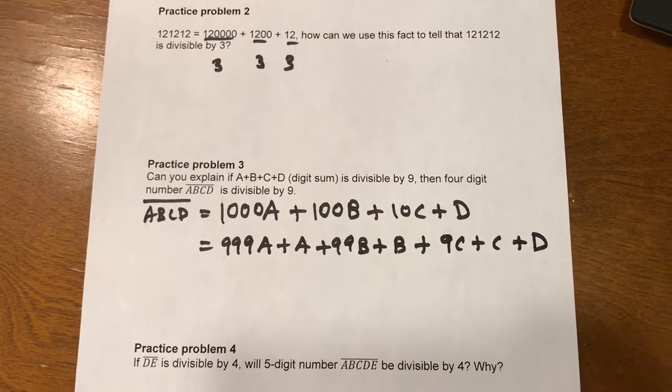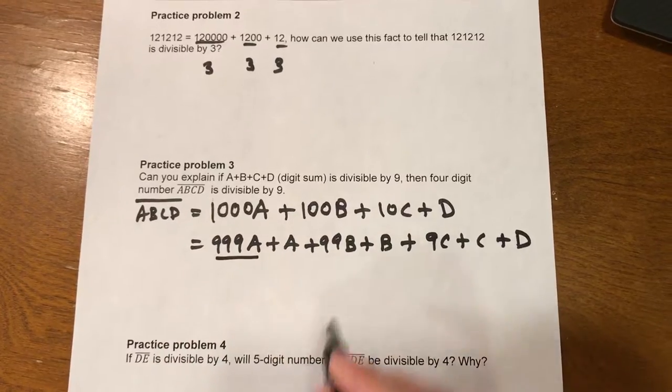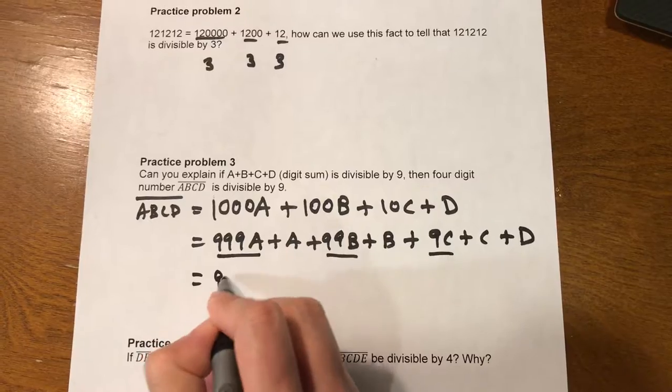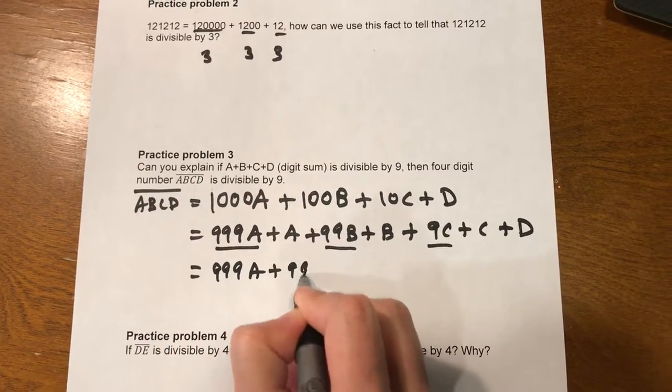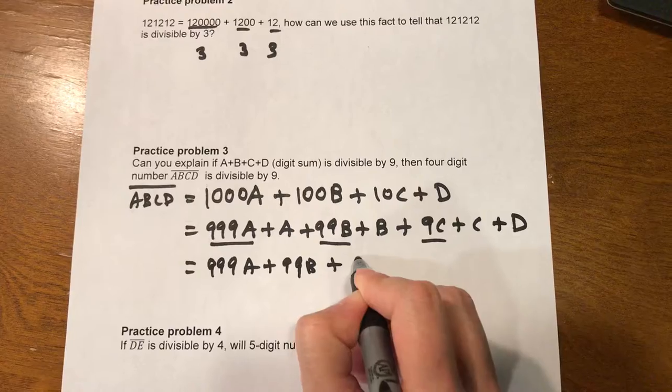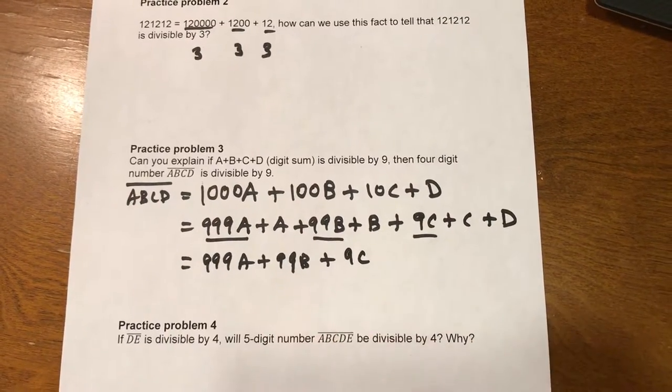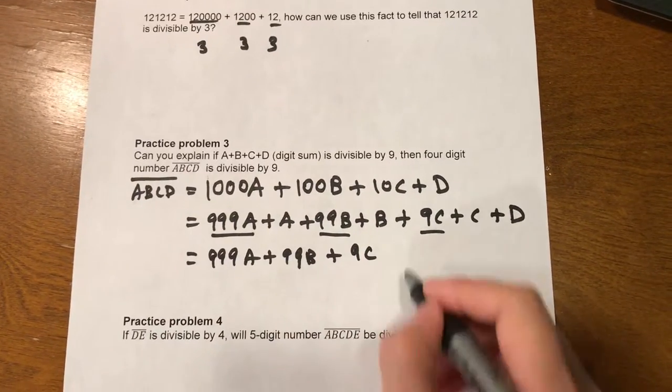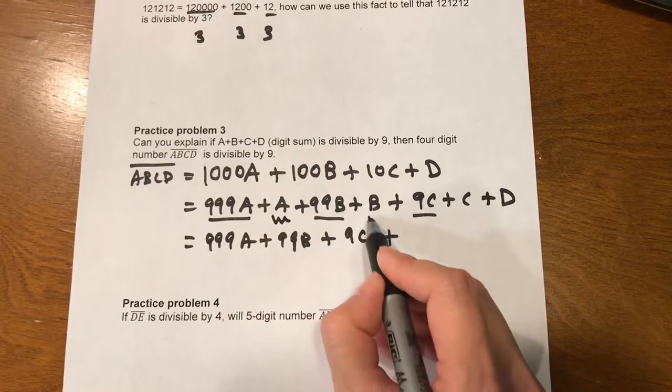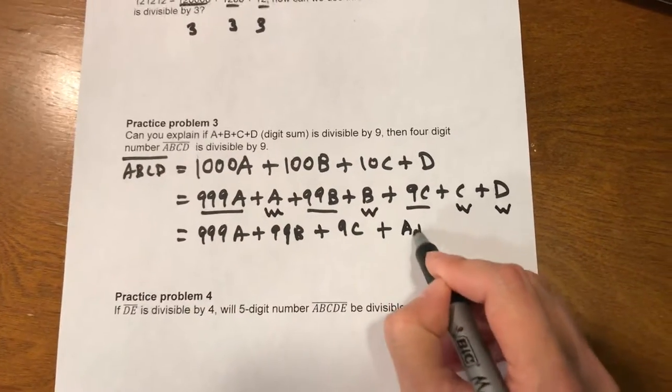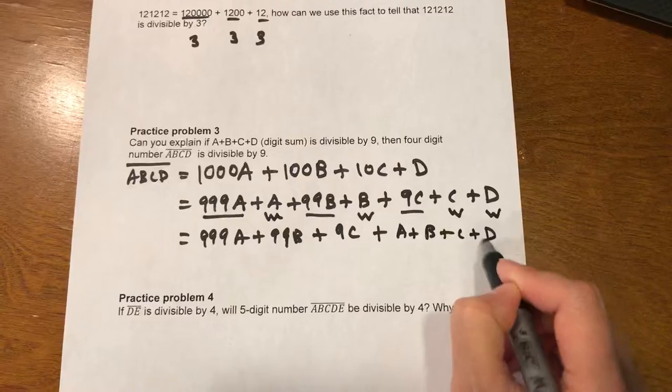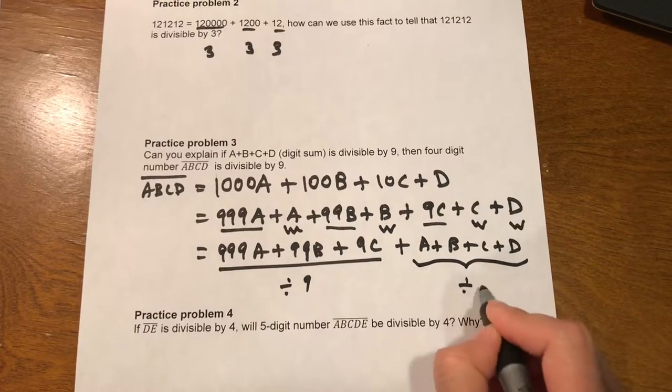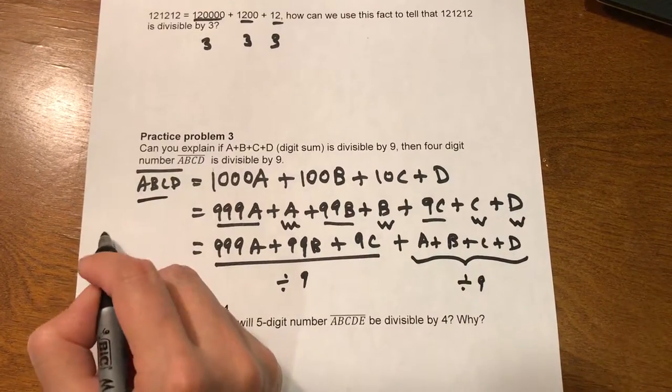So we collect all the terms that can be divided by 9. First term, third term, and the fifth term. So 999A plus 99B plus 9C. We know this can be divided by 9 because all the coefficients can be divided by 9. The remainder is A, B, C, and D. So this can be divided by 9. If the sum of these four numbers can be divided by 9, then the whole number can be divided by 9.